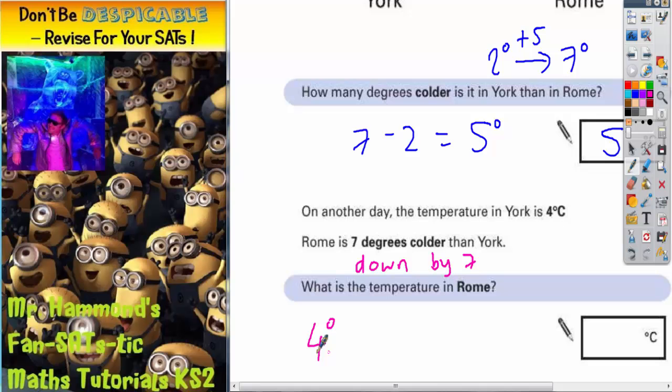We can use 0 to help us here. So if we're on 4 degrees, we could go down by 4, and we would get to 0. But then we need to go down by another 3.